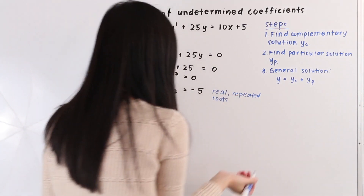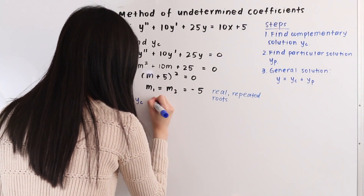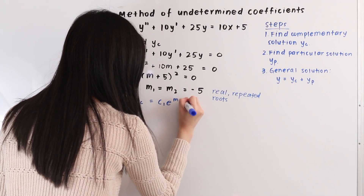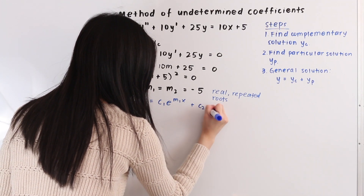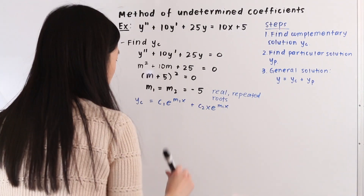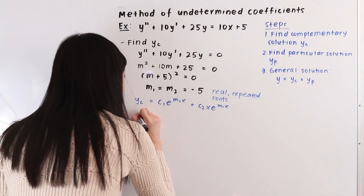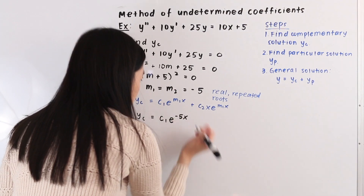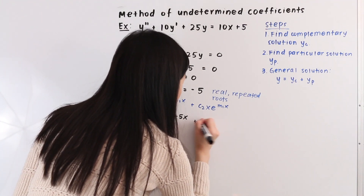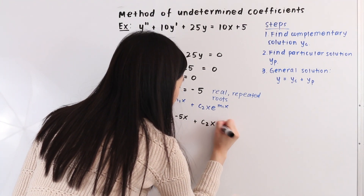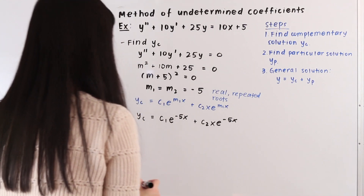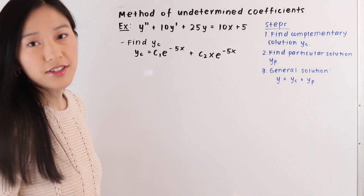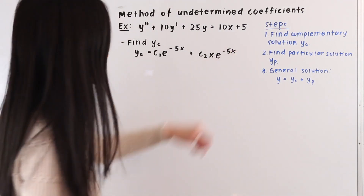Since we have real repeated roots, our complementary solution has the following form: yc is equal to c1 e to the m1 x plus c2 x e to the m1 x. Plugging in m1 equals negative 5, we get yc equals c1 e to the negative 5x plus c2 x e to the negative 5x. This is our complementary solution.